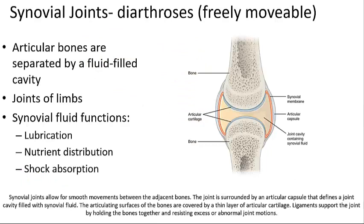Synovial joints are freely movable and have some distinct characteristics. They have articulating bones separated by a fluid-filled joint cavity. Not only are synovial joints composed of fibrous connective tissue and cartilage, they also possess a synovial cavity. They contain synovial fluid, which is largely derived from blood and has a clear, viscous egg-white consistency. Even in large joints such as the knee, the total quantity of synovial fluid is normally less than about three milliliters. There are three primary functions: lubrication, nutrient absorption, and shock absorption.